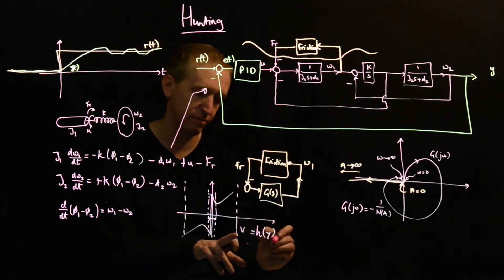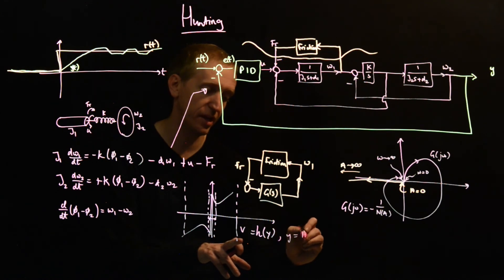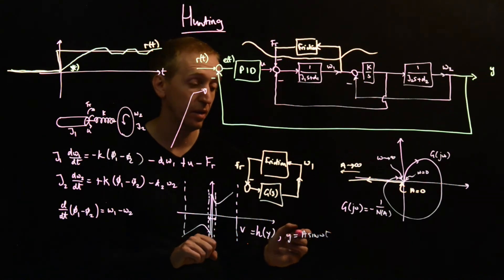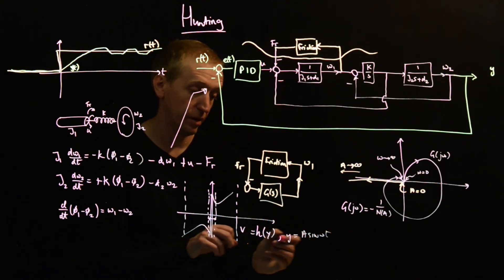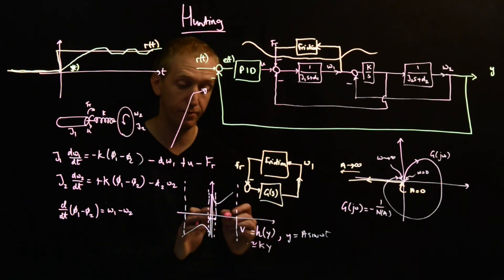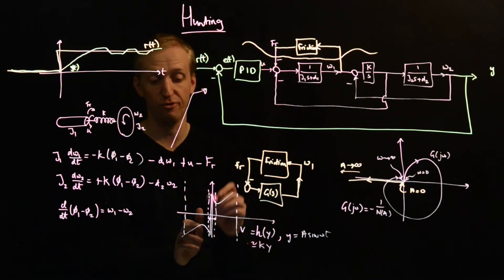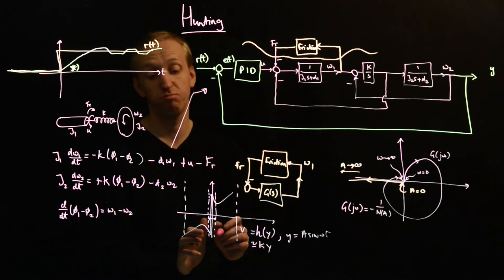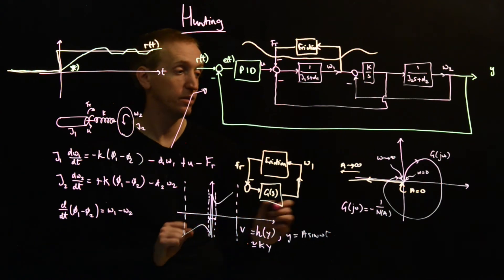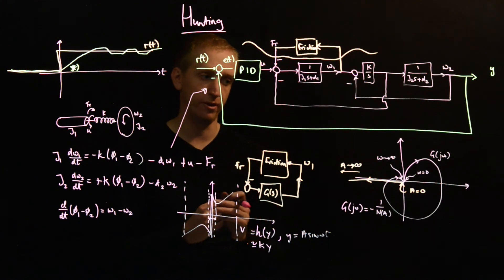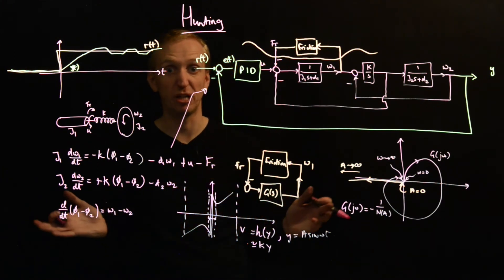So if we were to model this non-linearity by a linear function, so we were to replace our relationship. So typically we say the non-linearity H of Y, and let's just give this signal a name here. Let's say it's V. So if we were to replace this and then we say Y is equal to A sine omega T. So we're looking for this periodic solution. So if the amplitude is small, this behaves like a linear function. It's approximately equal to KY, where the slope of K is just corresponding to roughly the slope of the non-linearity you get. And so the slope here is pretty much infinite. So this means that for small amplitudes, the describing function is extremely large. So for small amplitudes, so A small N of A is approximately infinity.